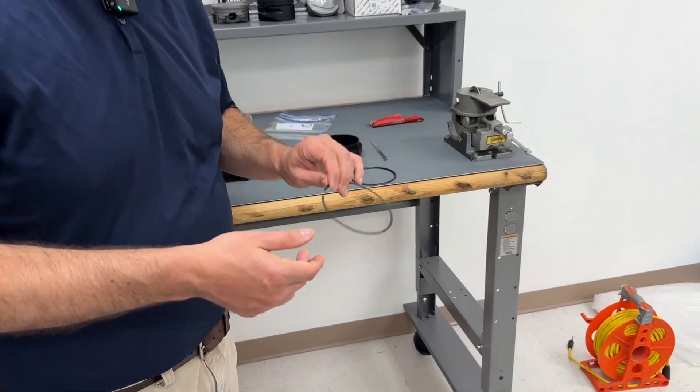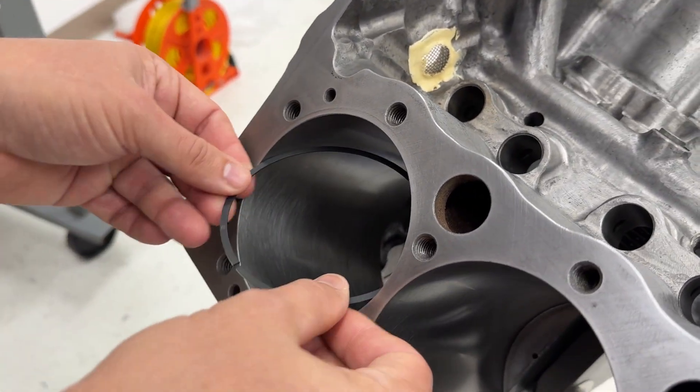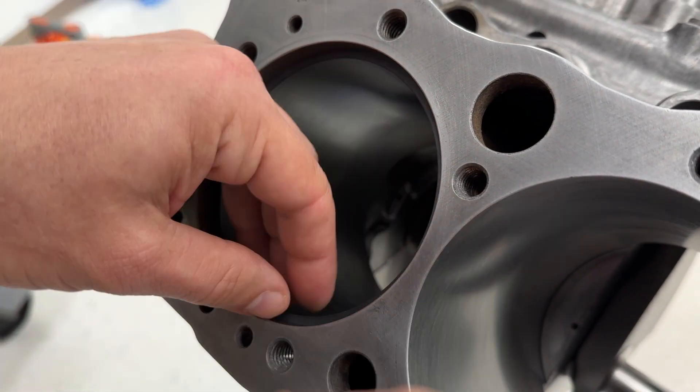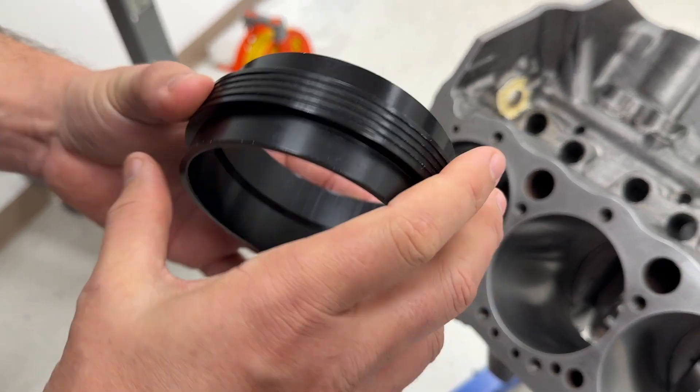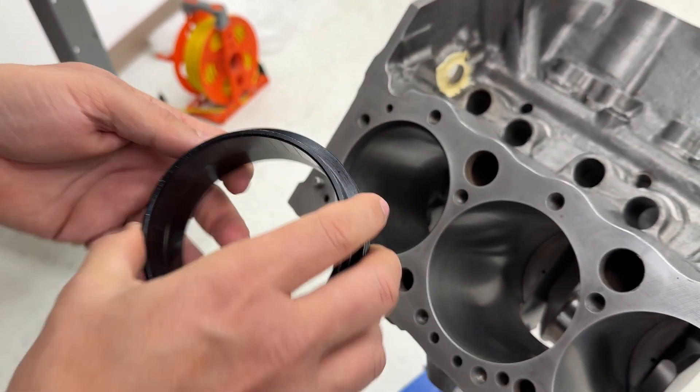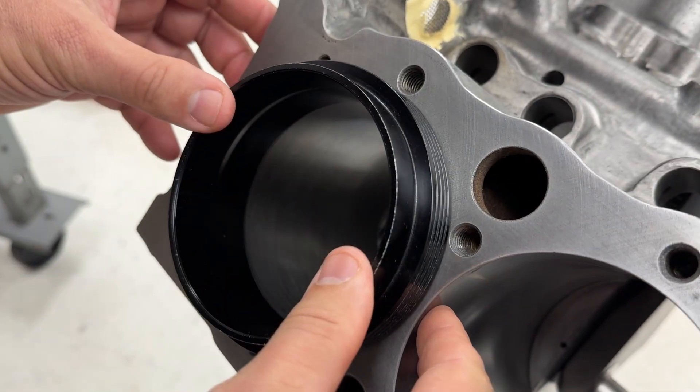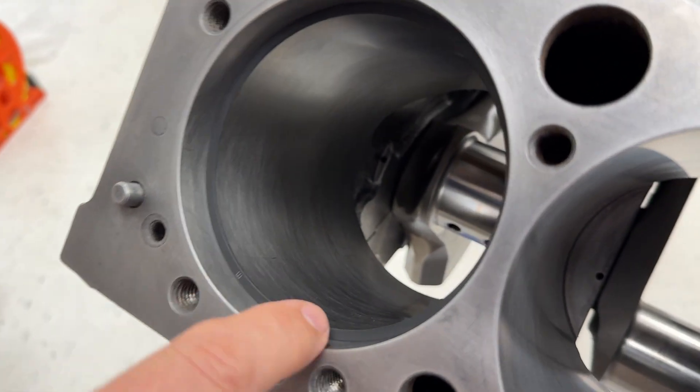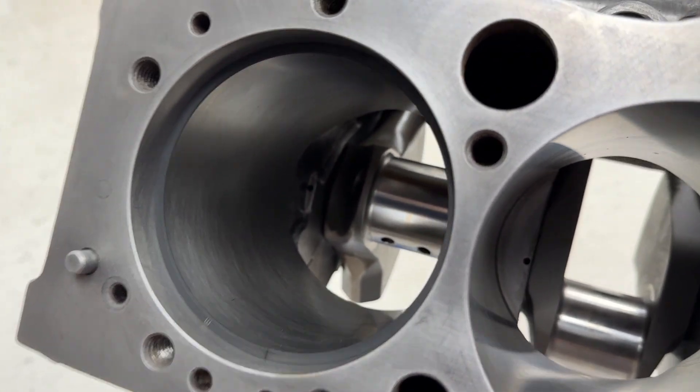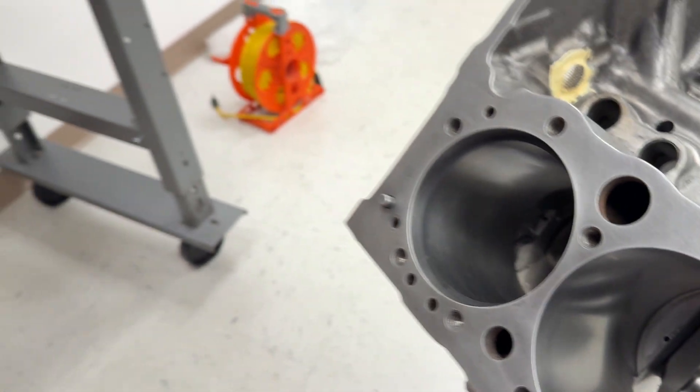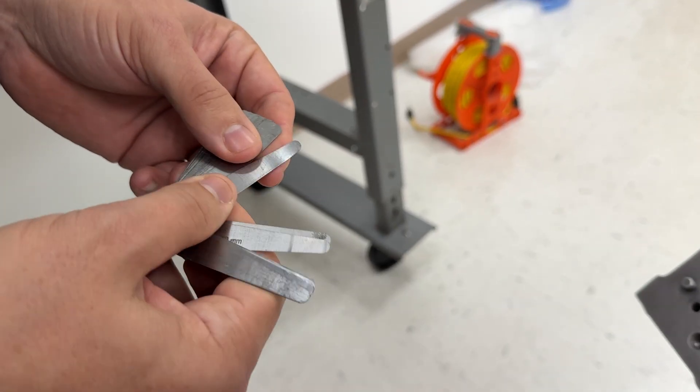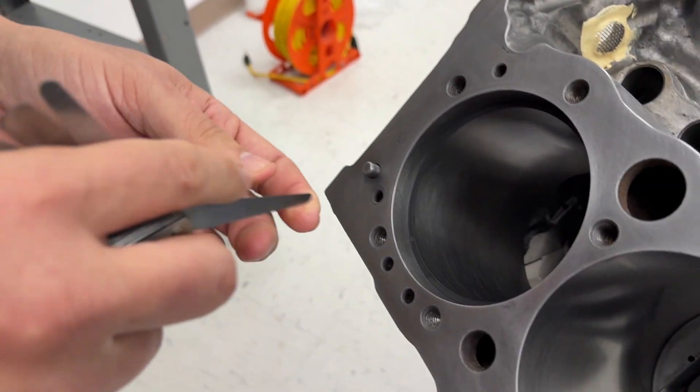Now that you know what the ring end gap needs to be, we need to see where it actually is to start with out of the box. So the first thing we're going to do is install the ring in the cylinder. And then we need to get it squared up so that it's the same distance down from the deck to the ring. So to do that, we're going to use this piston installation tool, but we can use it to square the ring up. We'll put it in there and push down on it. That squares the ring up. So it's the same distance down from the deck. And then you can see the end gap here. We just have a really small end gap to start with. So we need to check and see where we're at. So we'll start with a 10 thousandths and see if that'll go in.